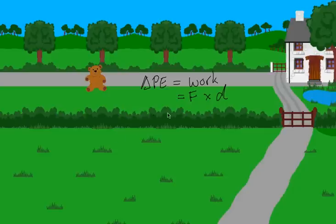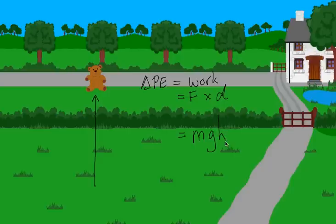In this case, the force I apply onto Teddy is equal to Teddy's weight, which is mg, and the height I lift Teddy is the distance from here to here. As a result, you can see that gravitational potential energy — or more correctly, the change in Teddy's gravitational potential energy — is equal to mgh.